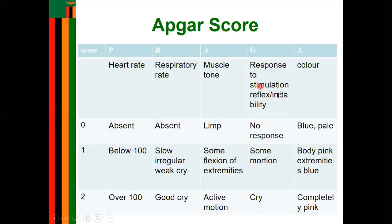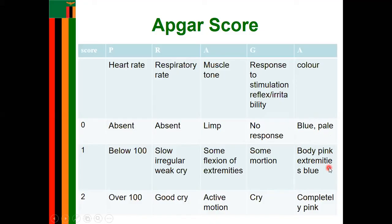For grimace — response to stimuli or irritation — if you touch the baby and there is no response, score zero; some motion scores one; if the baby cries, score two. For appearance in terms of color: if the baby looks bluish or pale, score zero; body pink but extremities blue scores one; completely pink scores two, which is a good sign meaning oxygen is being delivered to all body tissues.